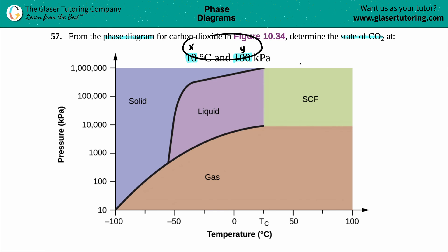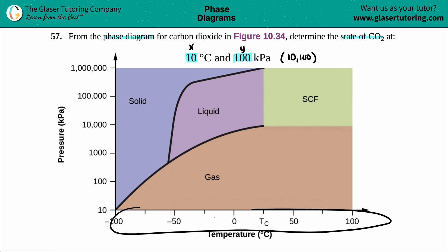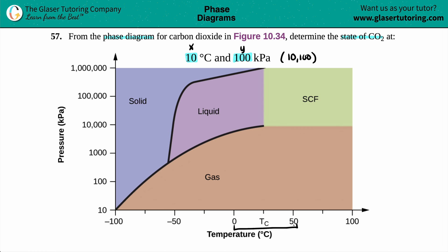So essentially we are just plotting a point: x, y — 10, 100. I'll start with the 10. I have to find 10 degrees Celsius on the x-axis, and it's going to be in between 0 and 50. The middle point here would be 25, because the middle between 0 and 50 is 25.